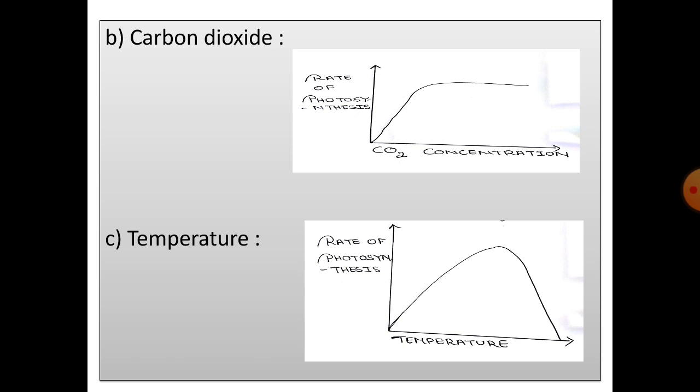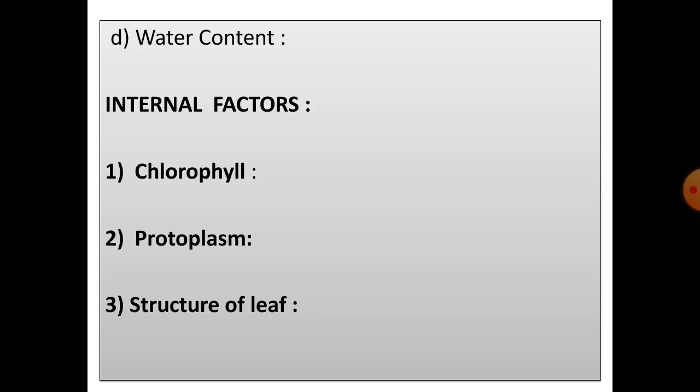Temperature. With a rise in temperature, the rate of photosynthesis rises. But this rise occurs up to an optimum temperature, which is about 35 degrees Celsius, after which the rate falls. You can see the graph has fallen down and it stops above 40 degrees Celsius. Water content. The scarcity of water due to reduced absorption from the soil or due to loss through transpiration reduces the rate of photosynthesis and causes closing of the stomata.